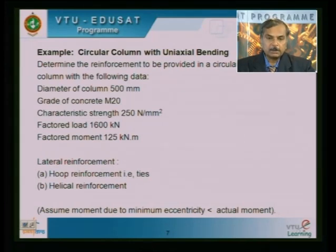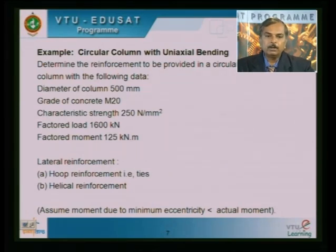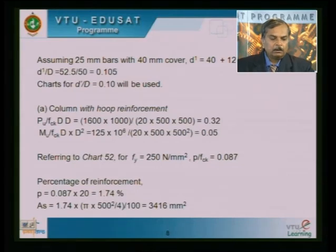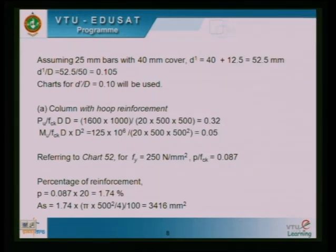As usual, assume the moment due to minimum eccentricity is less than the actual moment. Assume 25 mm dia bars with 40 mm effective cover, so D' = 52.5 mm. D'/D = 52.5/500 = 0.105, which is rounded down to 0.1, so the chart corresponding to D'/D = 0.1 is used.